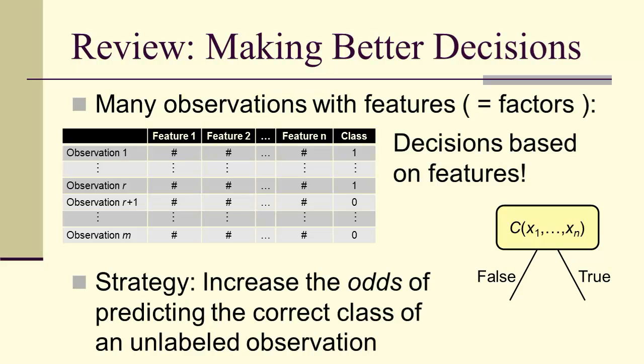And we'd like to increase the odds of predicting the correct class of an unlabeled observation. So from before the decision to after, we'd like a better odds of getting the answer right.